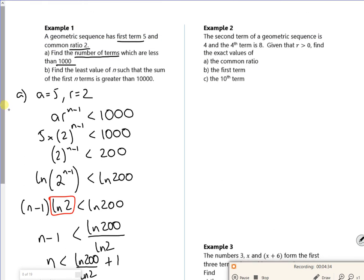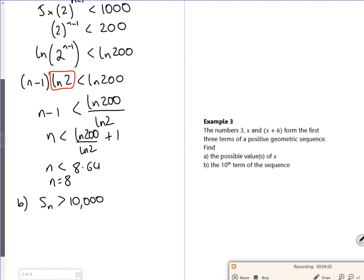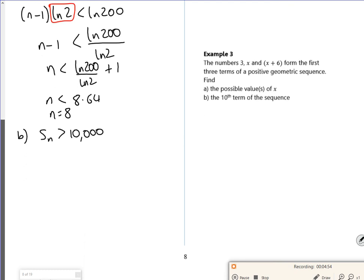Part B says find the least value of n such that the sum is greater than 10,000. So I'm looking for the sum to be bigger than 10,000. Now my r value was 2, so I want to use the equation with r minus 1 in it to keep my bottom line positive. So a is 5, then it's 2 to the n minus 1, over 2 minus 1. And that's greater than 10,000.